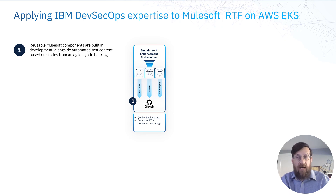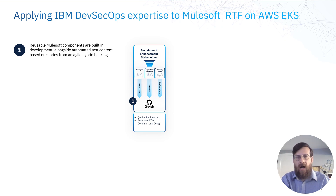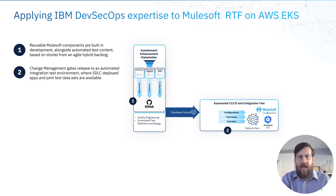They're producing infrastructure as code configurations. Thanks to the use of runtime fabric, they're able to deploy Terraform for the infrastructure. All of that's going into a source code repository like GitHub. We have a quality engineering automated test definition and design competency there that's augmenting the squads who are writing this content. All of that content is available via a developer portal.